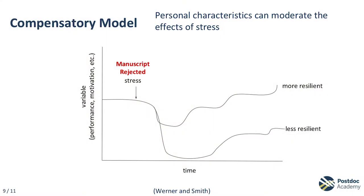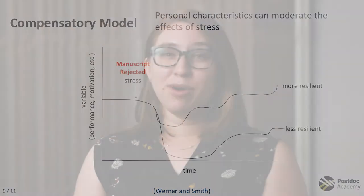In the compensatory model, Werner and Smith recognized that resilient characteristics decrease the amount of stress an individual experiences. If a postdoc has a manuscript rejected, their interpretation of that feedback can impact the stress they experience from the rejection. While the stressor is fixed — a rejected manuscript — your interpretation of that stressor affects how you feel and proceed. For instance, do you see the rejection as a reflection of you as a scholar, or as a message that the manuscript needs some work before it's ready for publication? I kind of think of this model as the 'stress happens but you choose the response' model.